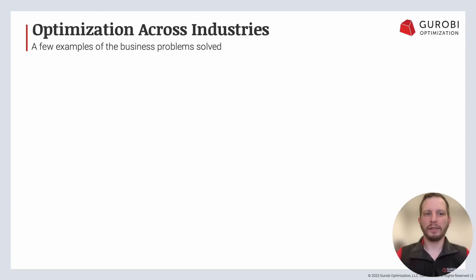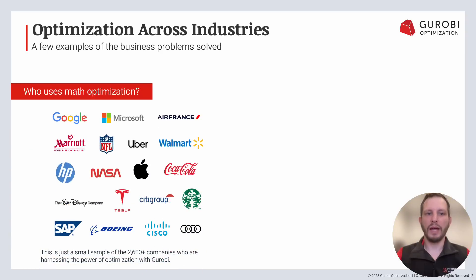One thing I want to hit on is why optimization is important and how it is such a great companion to machine learning, deep learning, and other data science tools. We're going to look at a few examples of business problems that optimization has solved. Anyone who does anything at a larger scale uses math optimization. These are some of the logos and companies working with Gurobi, spanning all sorts of industries and solving all sorts of different types of problems. Mathematical optimization is truly a malleable tool to help in decision making.